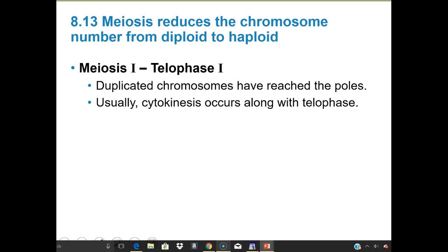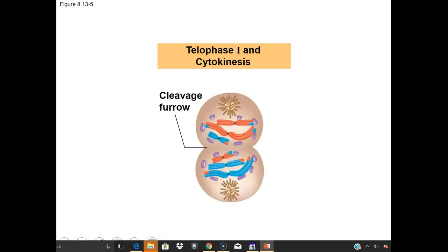In telophase I, the duplicated chromosomes reach their poles, and then we have cytokinesis — splitting of the cytoplasm. We can reform the nuclear envelope, but notice the sister chromatids are still attached together within the now separate cells.